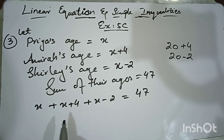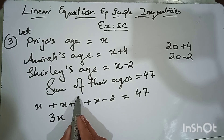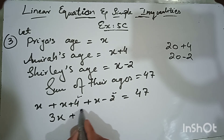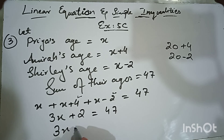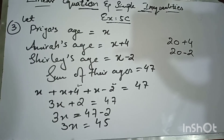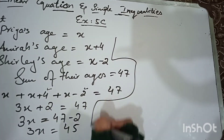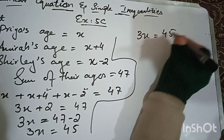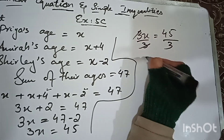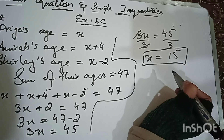Adding the x terms gives 3x. Adding the constants: 4 minus 2 equals 2. So 3x + 2 = 47, which gives 3x = 45. Dividing both sides by 3, x equals 15.